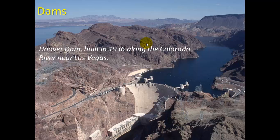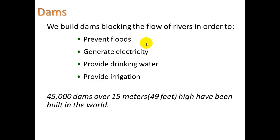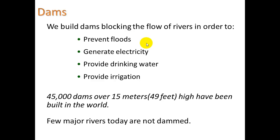And of course, dams. This is Hoover Dam, built in 1936 along the Colorado River near Las Vegas — one of many dams along the Colorado River. We build dams to prevent floods, to generate electricity as at Hoover Dam, to provide drinking water, and to provide irrigation water. So far, 45,000 dams over 15 meters or 50 feet high have been built in the world, making a big effect on the hydrologic cycle.